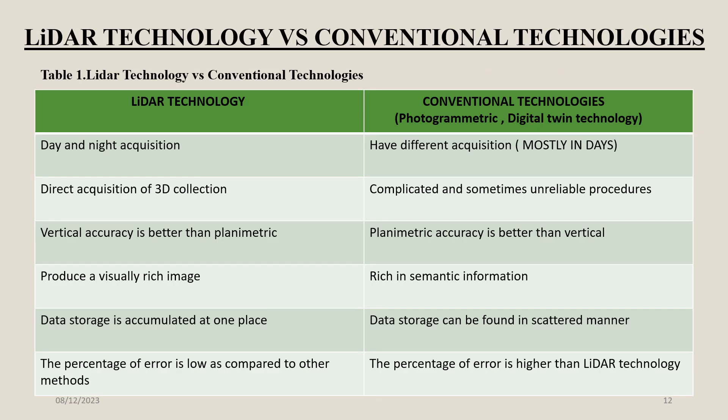Comparing LIDAR with conventional technologies: LIDAR offers day and night acquisition, while conventional technology mostly operates in daytime. LIDAR directly acquires 3D data, while conventional methods have complicated and sometimes unreliable procedures. LIDAR has better vertical accuracy than planimetric, while conventional technologies have better planimetric accuracy. LIDAR produces visually rich images; conventional technology is richer in cinematic information. LIDAR stores data in one place, while conventional data can be scattered. LIDAR also has a lower percentage of error.